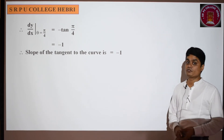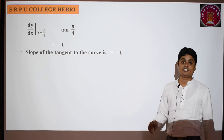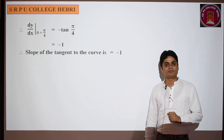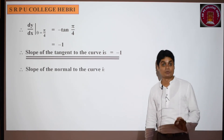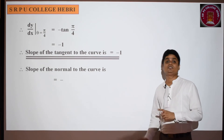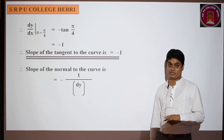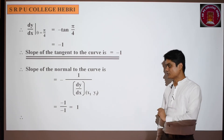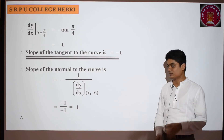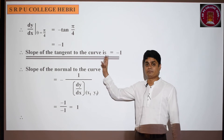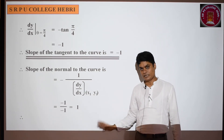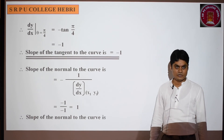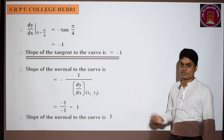Now we need the final answer. The question asks for the slope of the normal. Slope of the tangent at θ = π/4 is -1. The slope of the normal is -1/(slope of tangent) = -1/(-1) = 1. So the slope of the normal to this curve is 1. This is a simple question but the key concept is parametric function differentiation from the previous chapter.